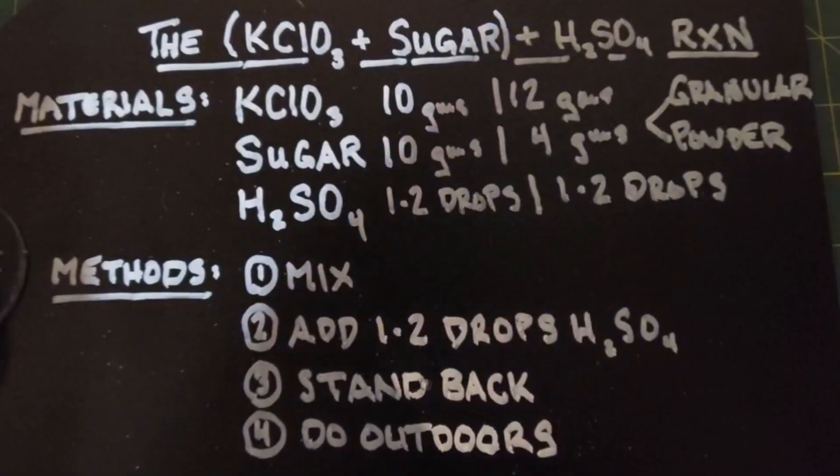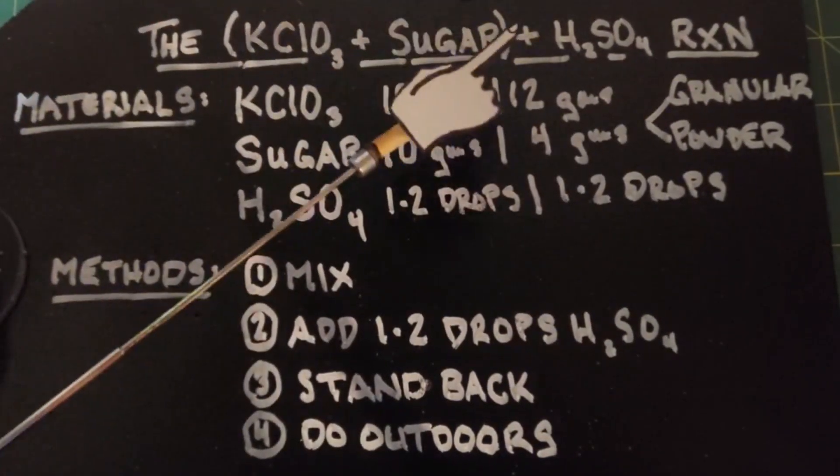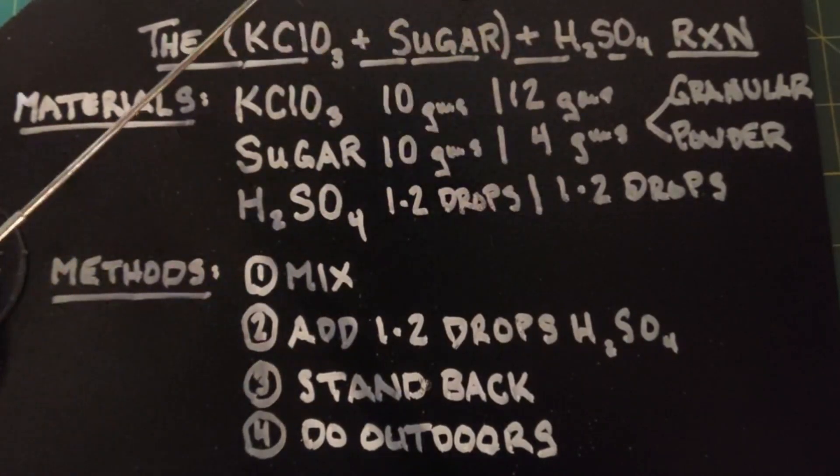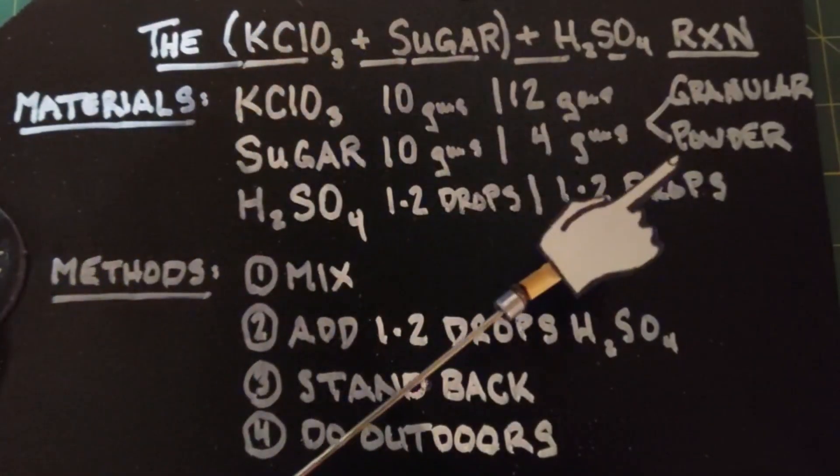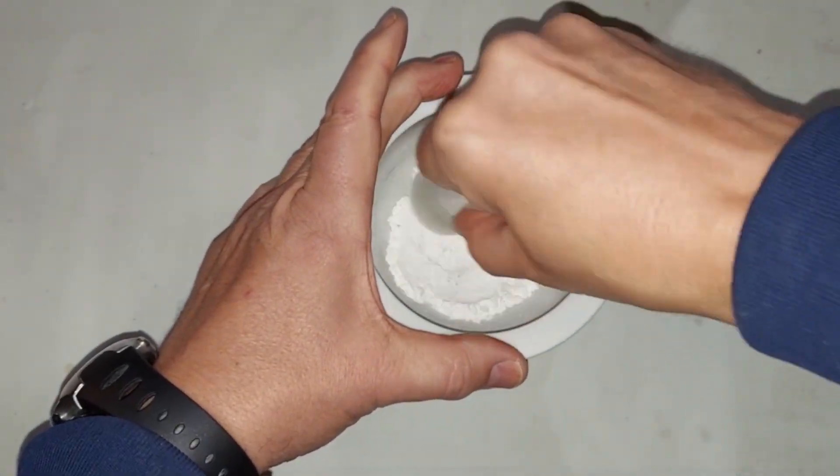Quite frankly, with the reaction we just saw, I am not going to bother testing these ratios here. It's just a waste of product, but I will be testing the powdered sugar next. I'm going to grind the potassium chlorate and the powdered sugar together just to see what happens.